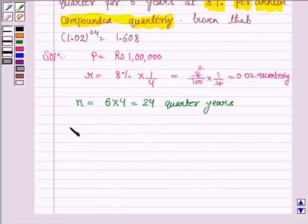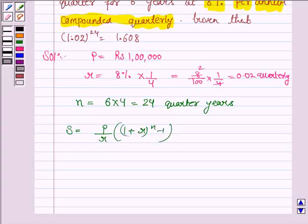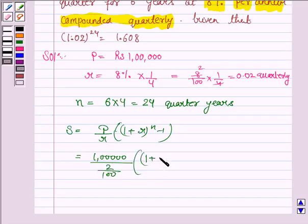S is given by the formula P/R × [(1+R)^N - 1]. Let's substitute all these values: S = 1,00,000 / (2/100) × [(1+0.02)^24 - 1].